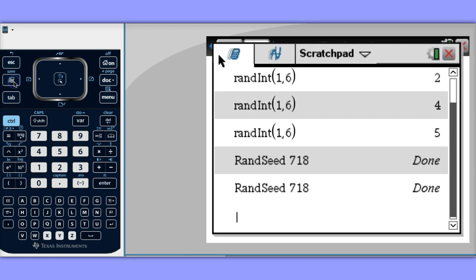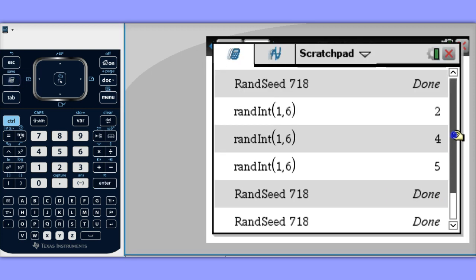Well, on my scratch pad, I seeded my calculator with the random seed 718, so I knew the list of numbers.